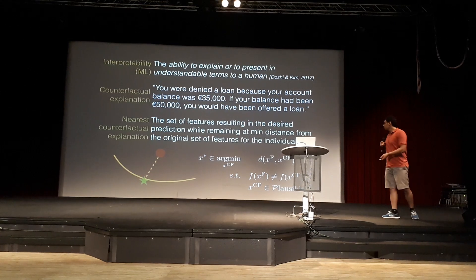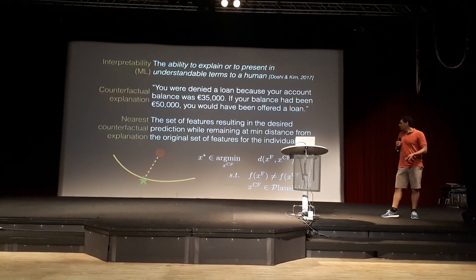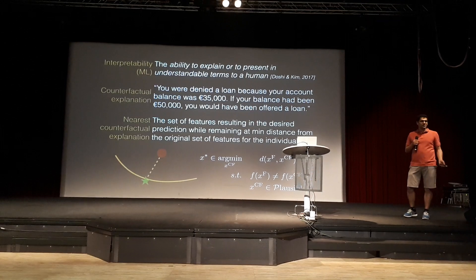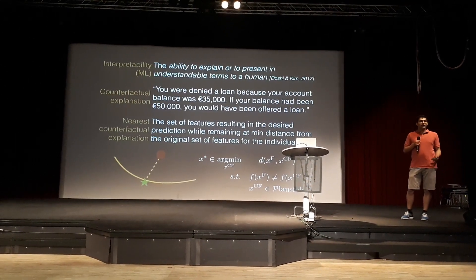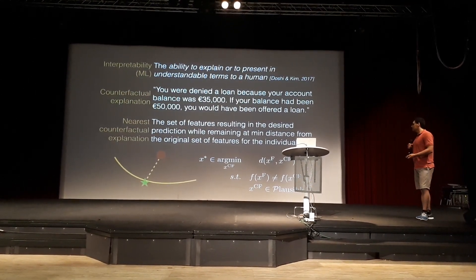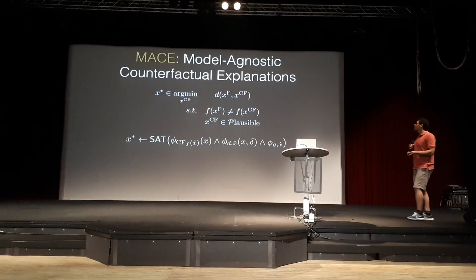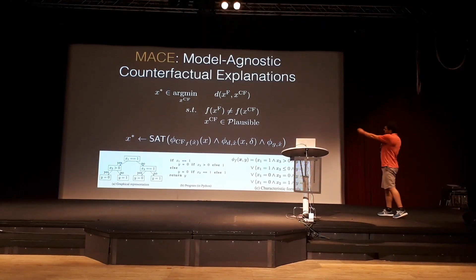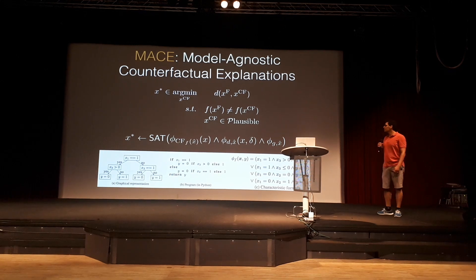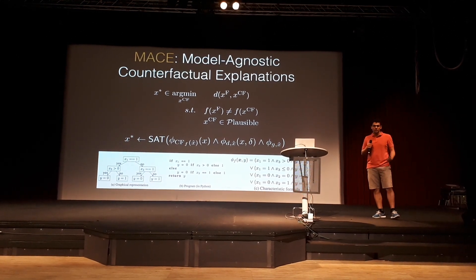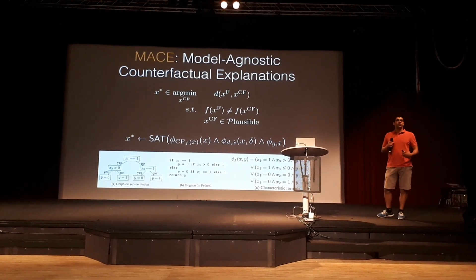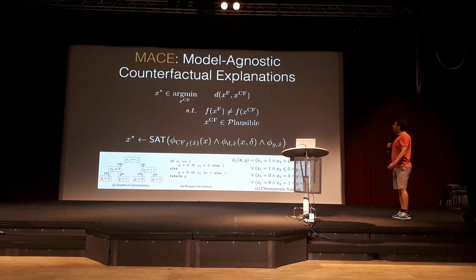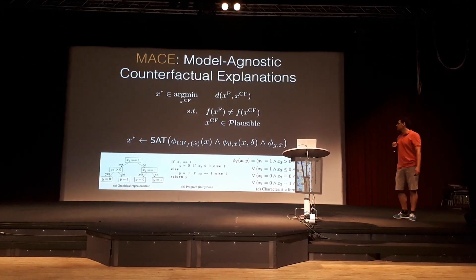This problem can be formulated as such. However, this optimization problem does not generalize well to different distance metrics or function classes, and the current methods do not come with distance guarantees. So we propose model agnostic counterfactual explanations where the original optimization problem is converted into a conjunction of logical formulae, representing both the optimizer, the trained model, as well as the constraints that we have. We have an example of the conversion on the bottom here.